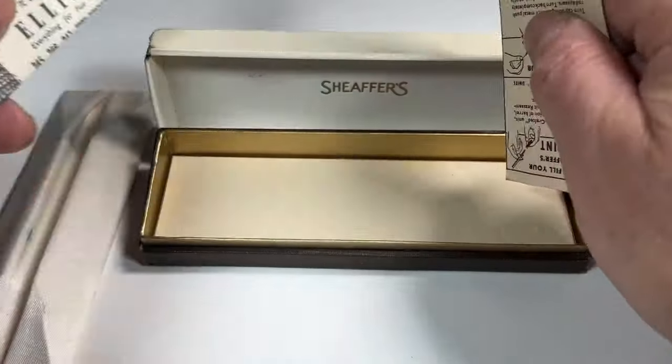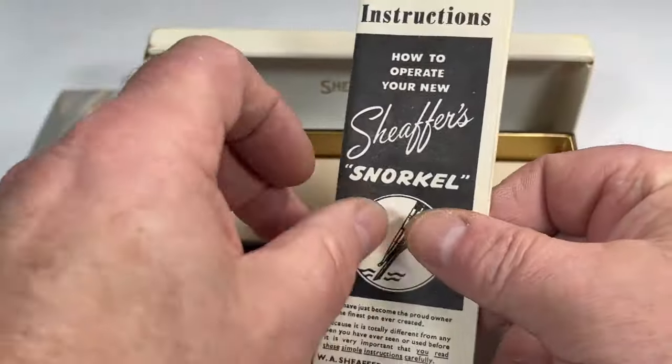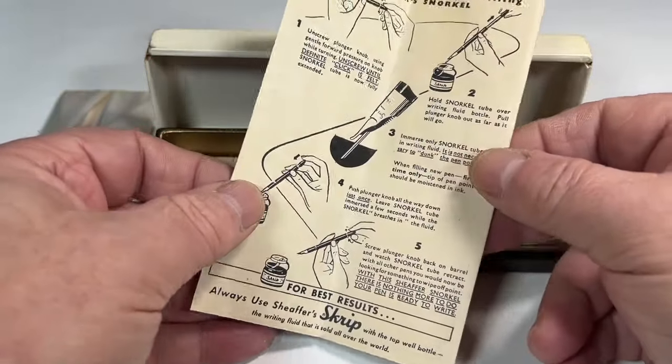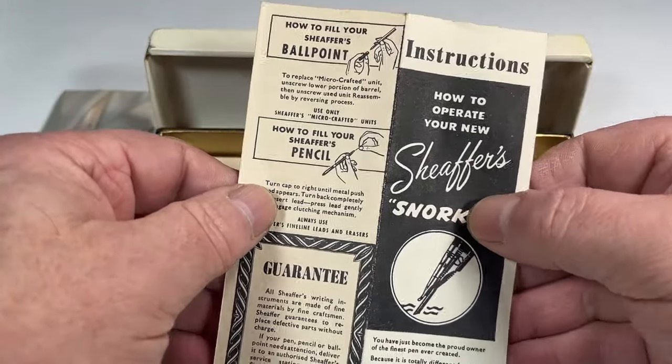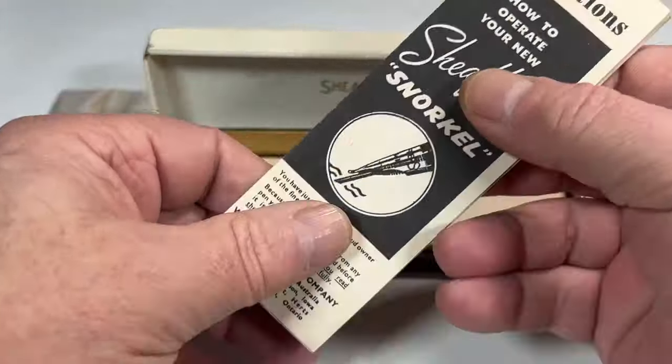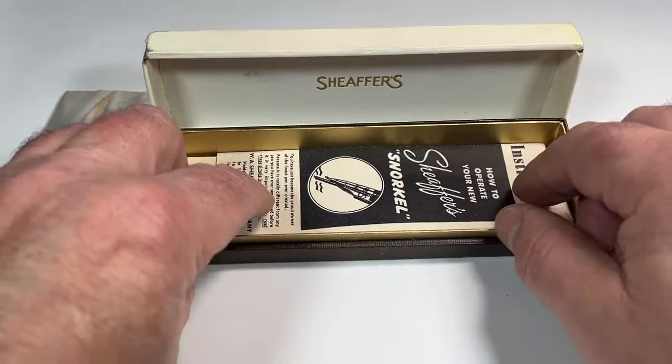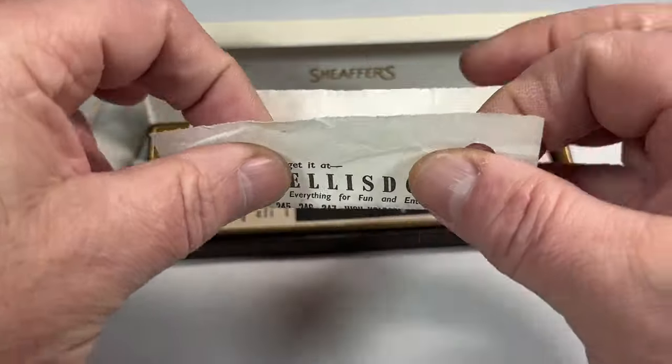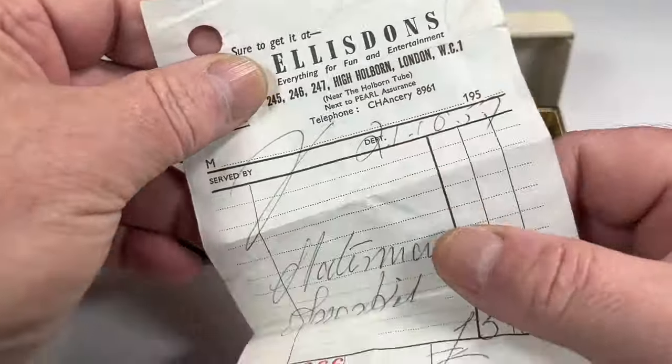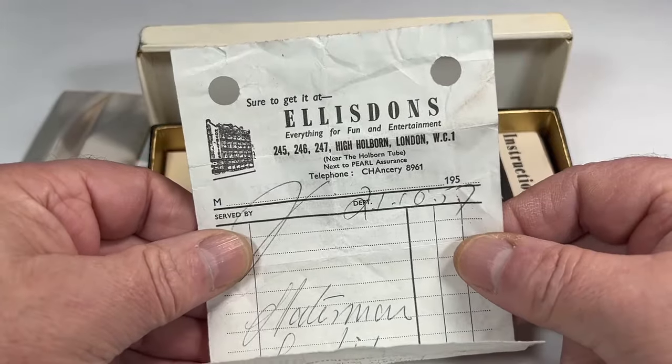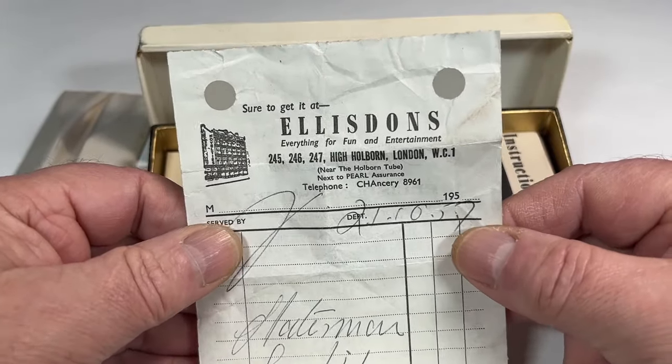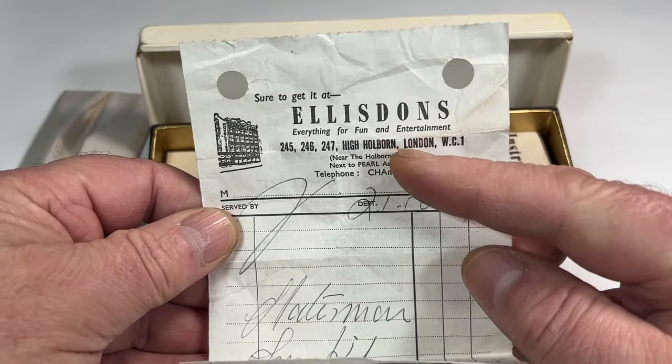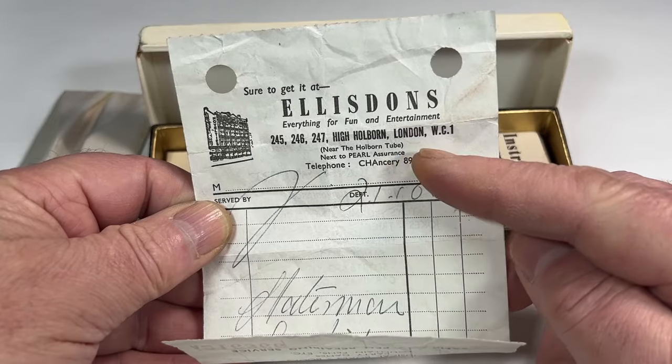Not only do we have the original instructions, as you can see there, in lovely condition. So that's a bonus, first of all. And secondly, look at this. We've actually got the original receipt from whoever purchased it from, is it Elisden's in High Holborn in London?